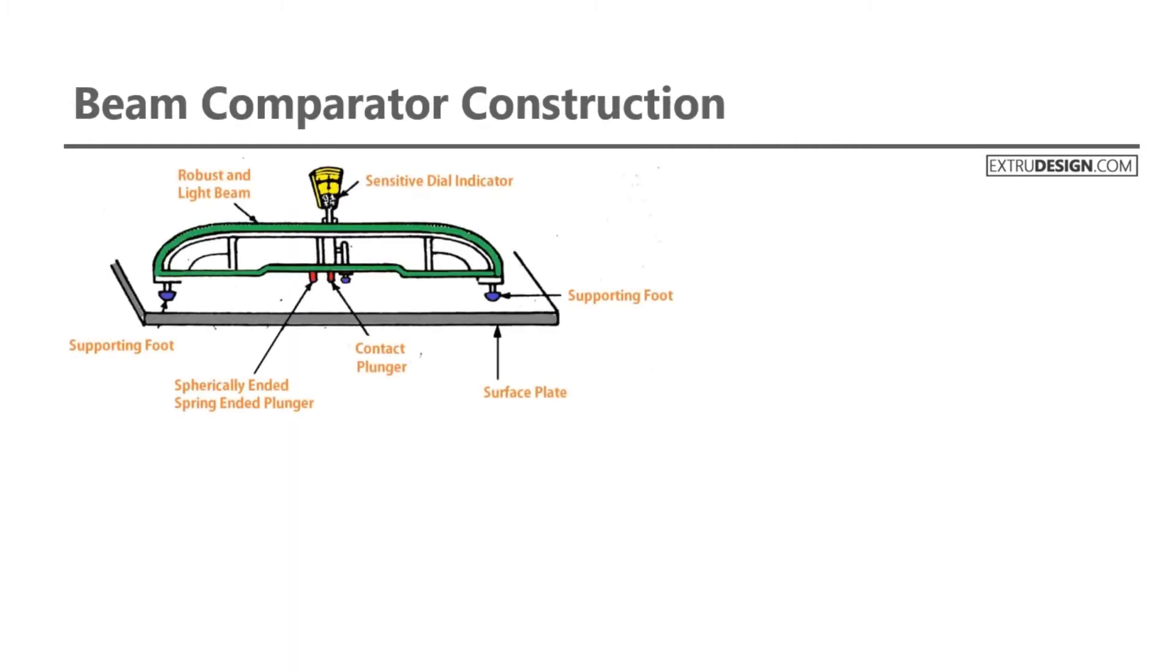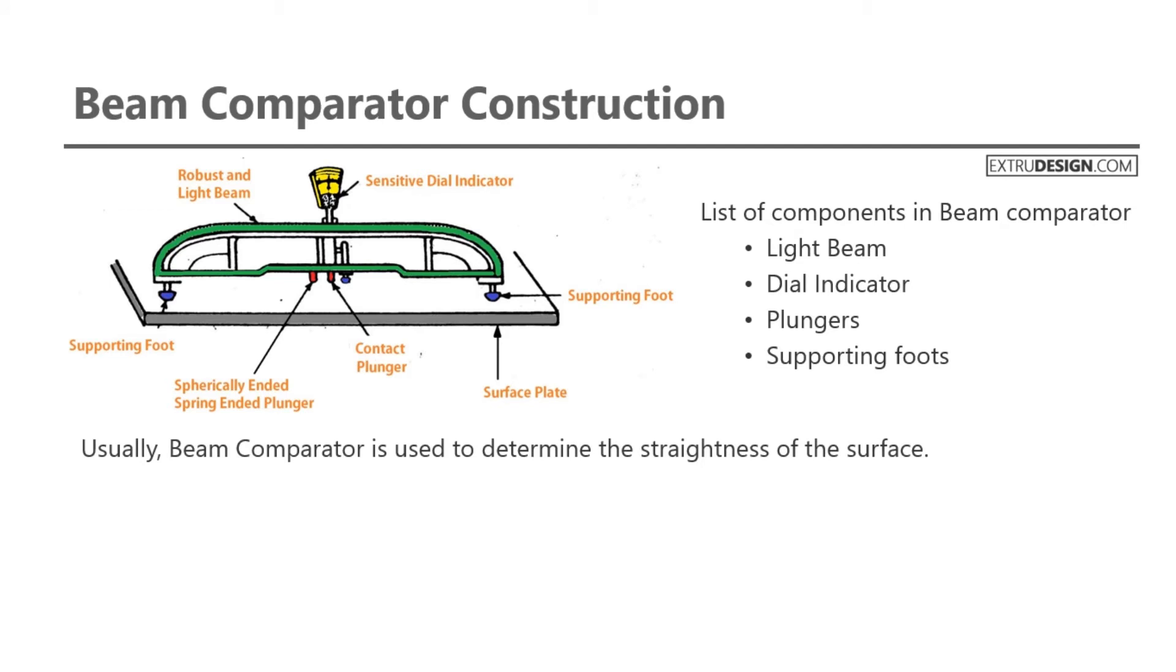Now the second method is beam comparator construction. Check the schematic diagram of the apparatus used for flatness testing in this method. This contains the following components: light beam, dial indicator, plungers, and supporting feet. Usually, beam comparator is used to determine the straightness of the surface.